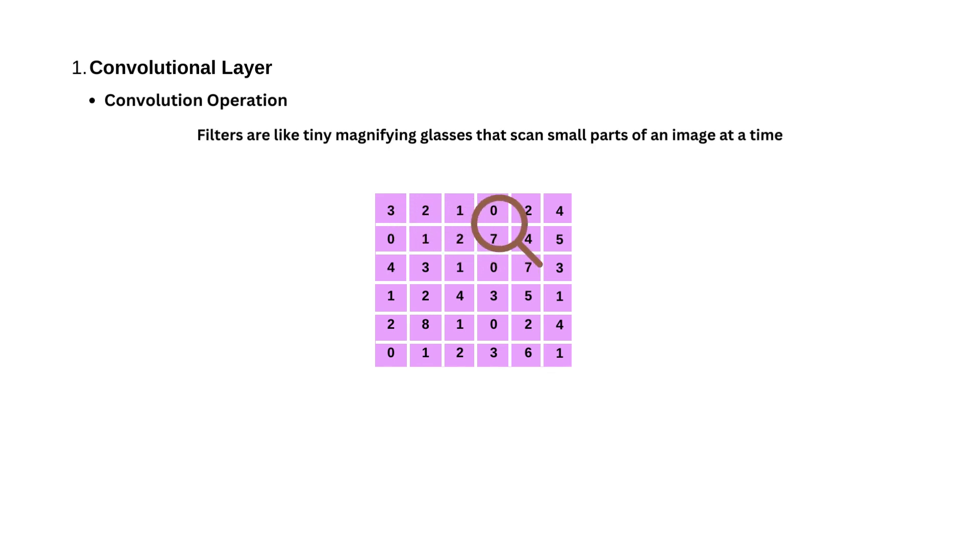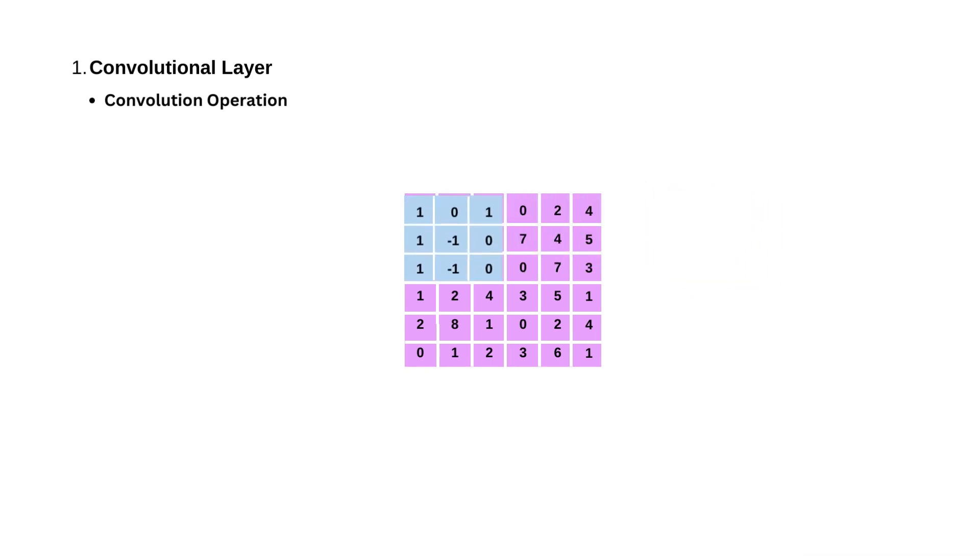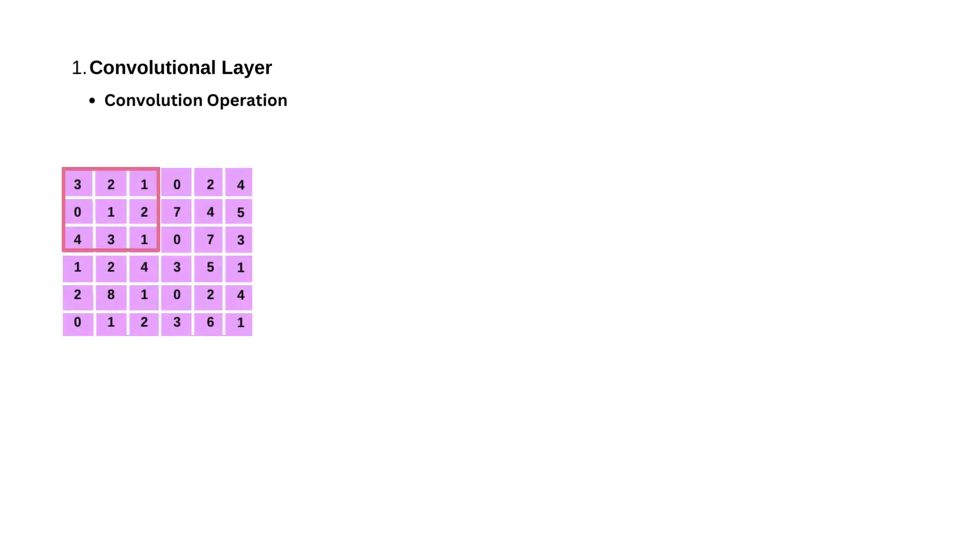Now, filters are like tiny magnifying glasses that scan small parts of an image at a time. These filters are small grids made up of numbers. Let's see how a filter works. Imagine you place the filter at the top-left corner of your image. Now, you look through this filter at a tiny piece of the image that's right underneath it.